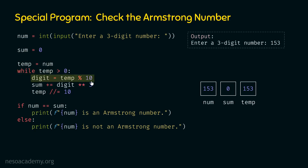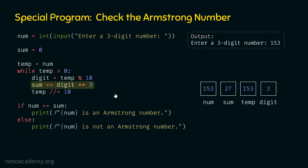Entering the while loop: temp (153) is greater than zero, so we continue. digit = temp % 10 gives 3. Then digit ** 3 = 27, so sum becomes 27. Next, temp = temp // 10 gives 15. The last digit 3 has been removed and we are left with 15.